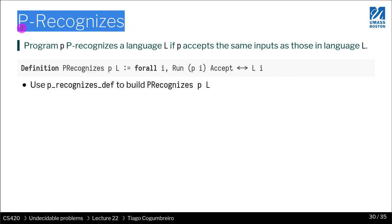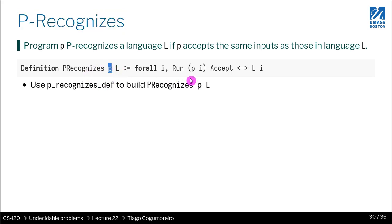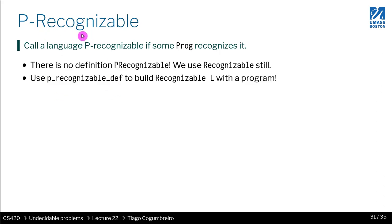First I need to introduce P recognizes. It's analogous to recognizes, but now instead of machines, we have programs. A program P recognizes a language - we use running of a program rather than running of a machine. If the running returns accept, that happens if and only if the language accepts the input. You need to use P underscore def to build a P recognizes. For recognizable, there is no P recognizable - there's only recognizable because it talks about languages, not specific programs. What exists is P underscore recognizable, which takes a program rather than a machine to show that a language is recognizable.